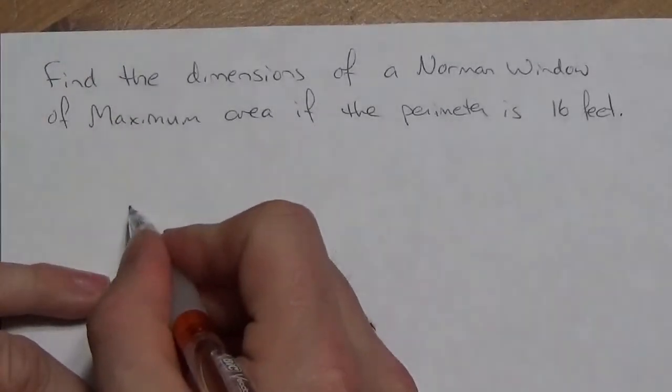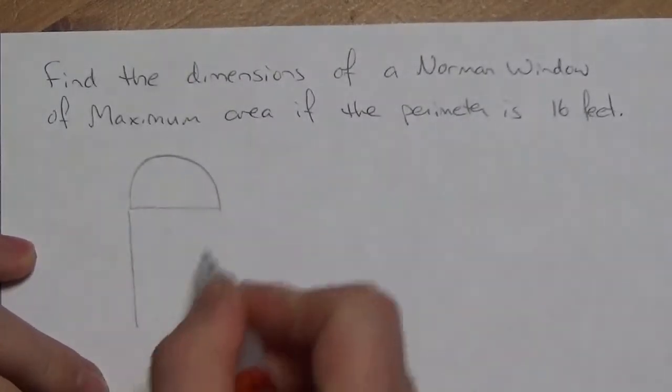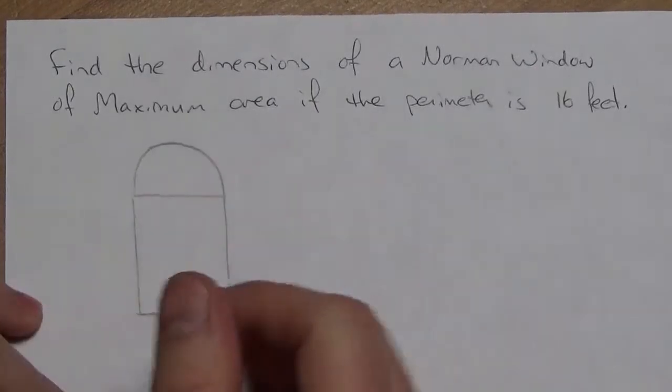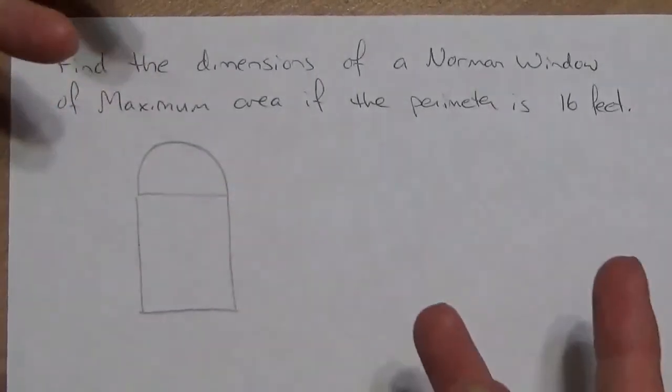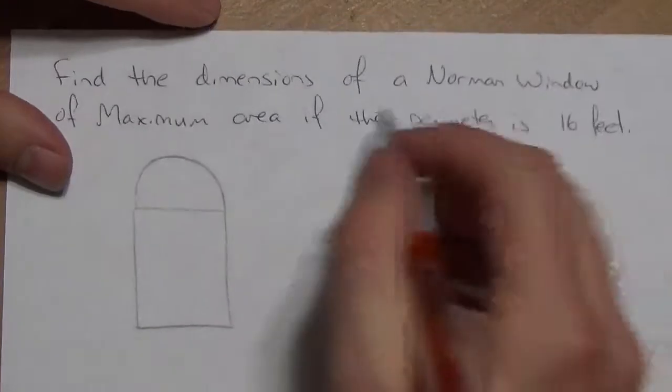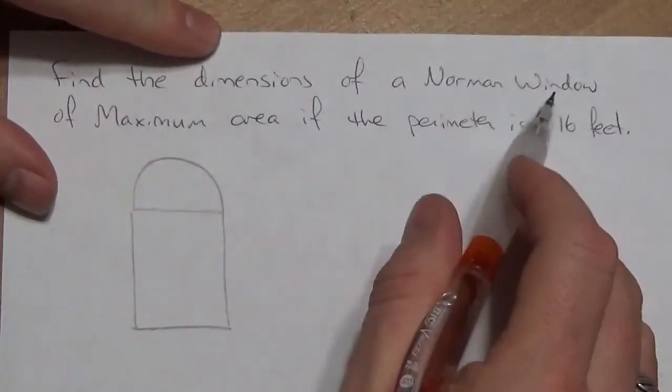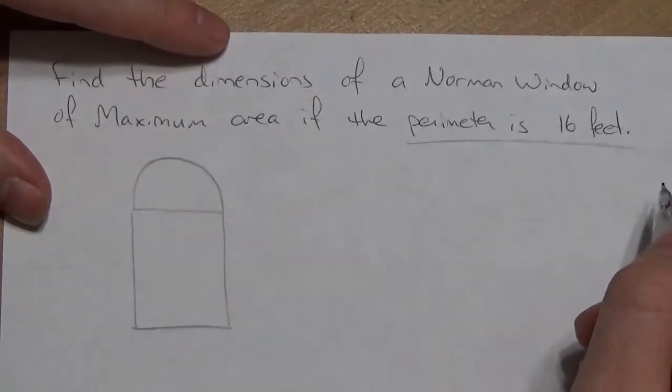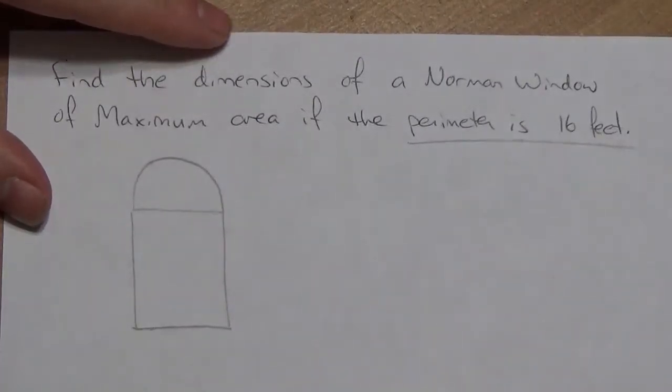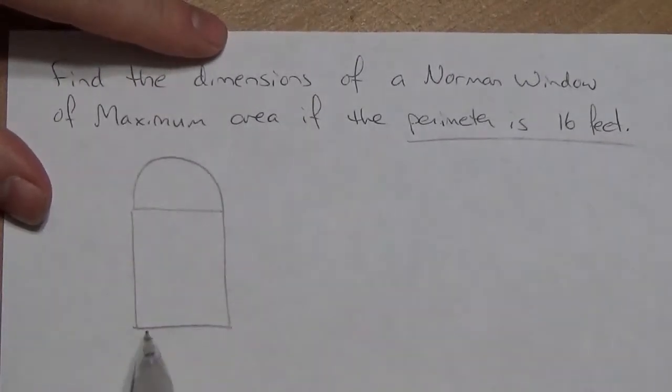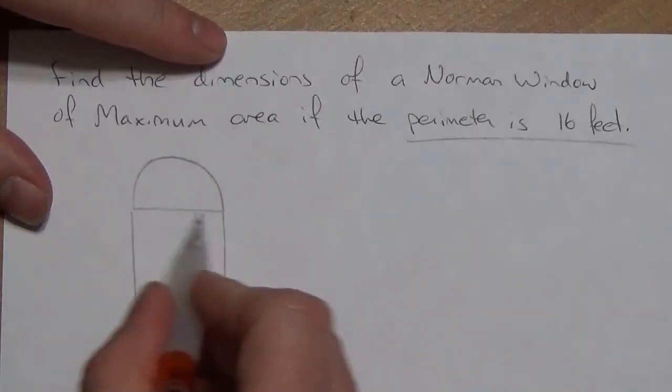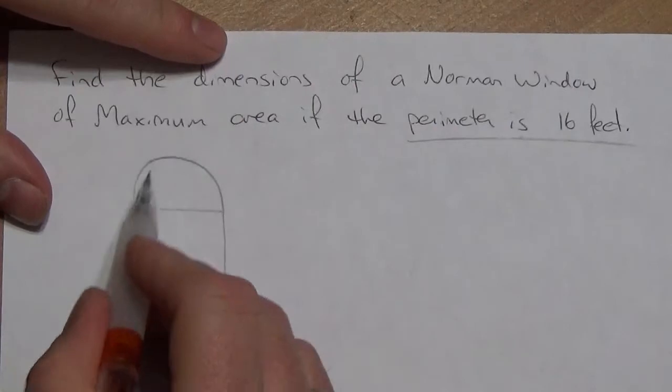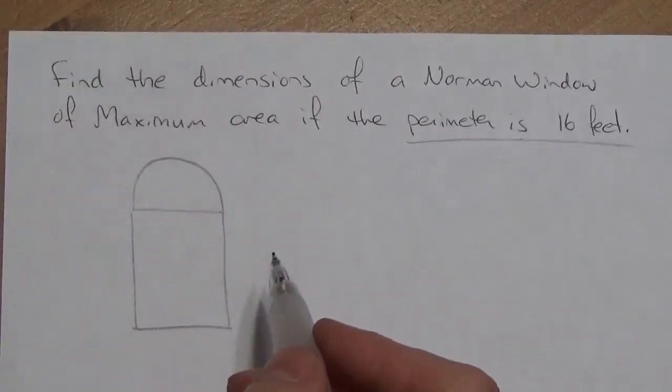Now, a Norman window is one that's got the semicircle on top and then rectangular window underneath here. So, usually you're given some sort of limiting feature. And in this particular case, we're going to find the dimensions of the Norman window with a maximum area. And here's the limiting factor: the perimeter is only 16 feet. Now, remember the perimeter is just the outside distance here. This line that I've drawn across here isn't part of that. I've only drawn that to separate the semicircle from the rectangular window portion.